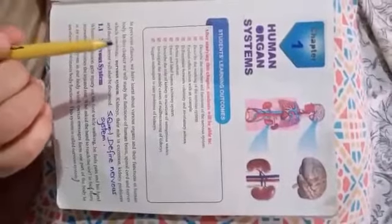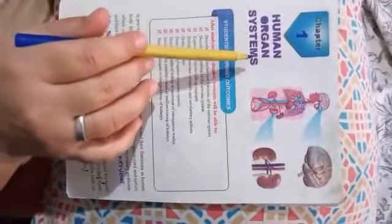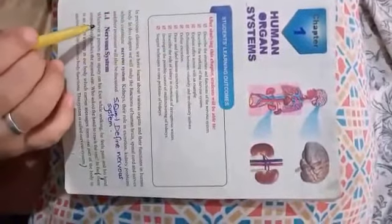Assalamu alaikum students, today we are going to revise chapter number one, human organ systems. We have to revise the topic nervous system, neuron or nerve cell, and types of neuron up to this.